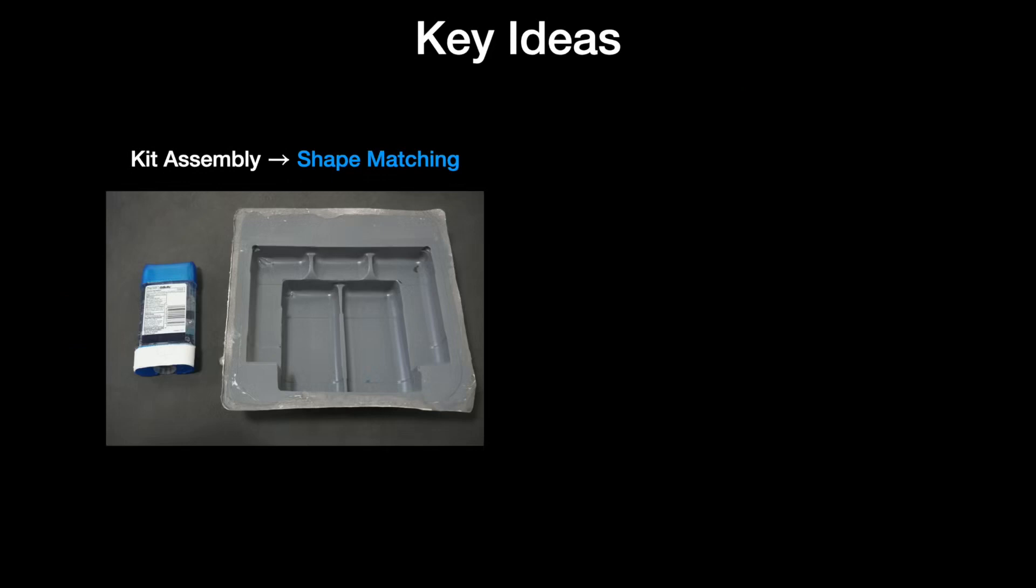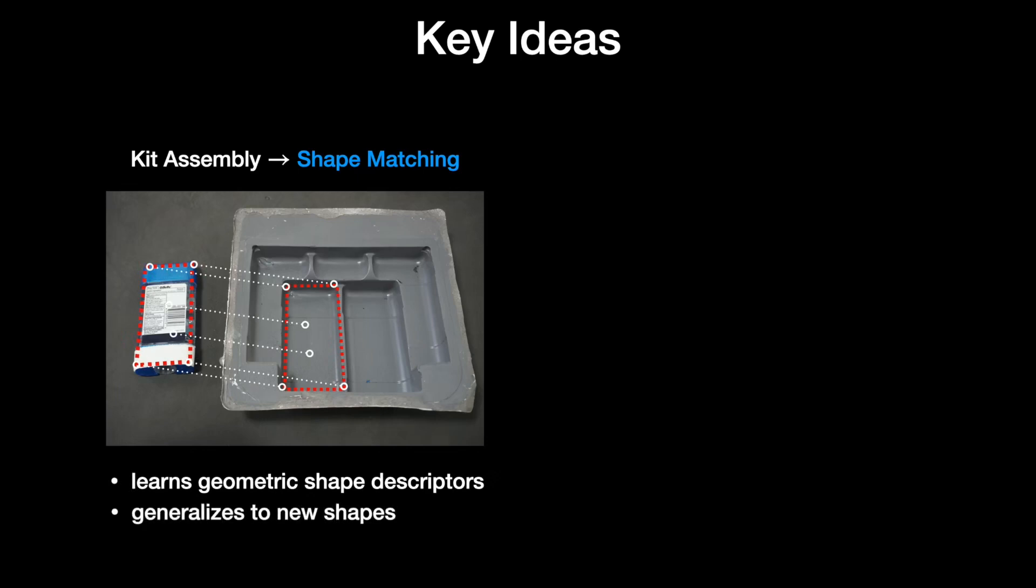Form2Fit is based on two key ideas. One, it leverages visual geometric descriptors to establish correspondences between objects and their target placement locations. As it trains over a variety of objects across multiple kitting tasks, Form2Fit acquires a broader understanding of how shapes and surfaces fit together, subsequently learning more generalizable descriptors that are capable of matching new objects and target locations.